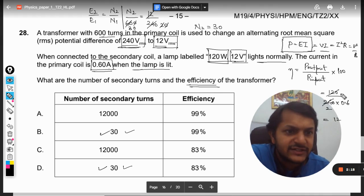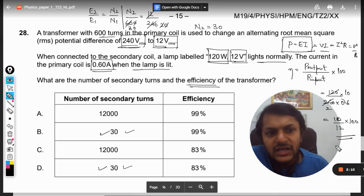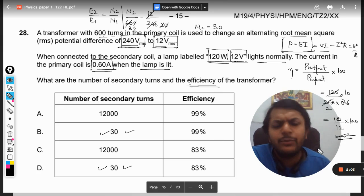So it should come out to be 240 into 0.06, which is 120. This is 2 and 0.6, it can be taken as like 10 removing the decimal, so it will be 10 divided by 12 into 100.